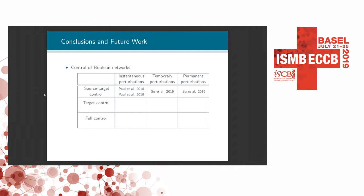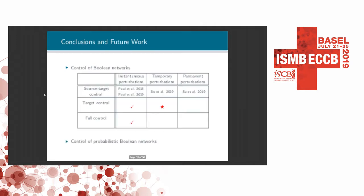To conclude, in this work we developed efficient methods to solve the minimal target control and the minimal full control problem with instantaneous perturbations. We are currently working on a method for minimal target control with temporary perturbations. The idea is that given a network, we compute all possible solutions, incorporate practical constraints, and provide all solutions to biologists so they can choose the appropriate one for their experimental settings. In the future, we also plan to extend our control methods to probabilistic Boolean networks. Thank you.